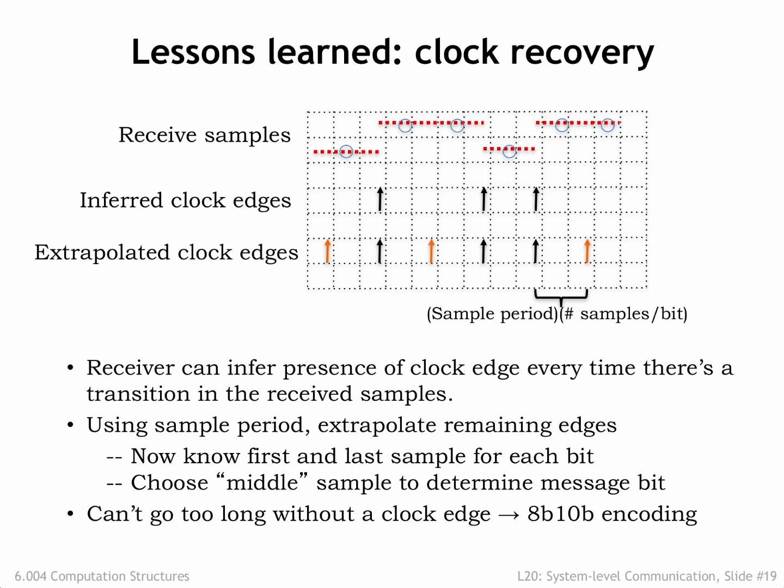Of course, the receiver has to reverse the 8B10B encoding to recover the actual message bits. The benefit of this trick is that we truly only need to send a single stream of bits. The receiver will be able to recover both the timing information and the data without also needing to transmit a separate clock signal.